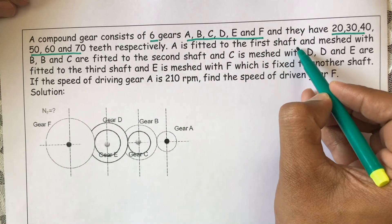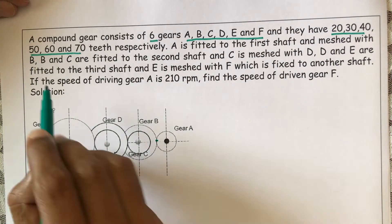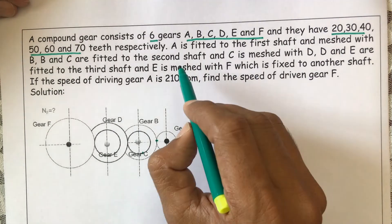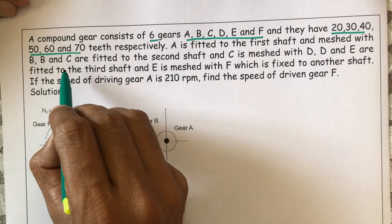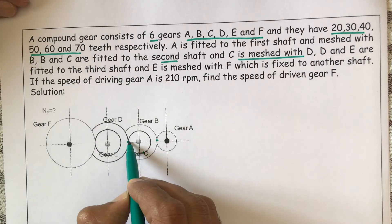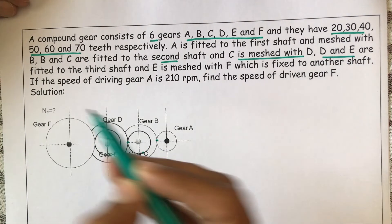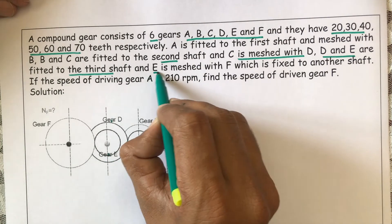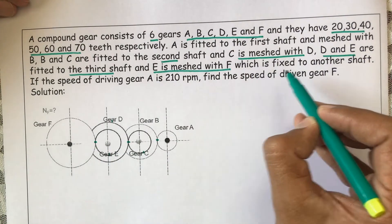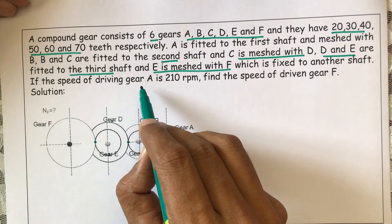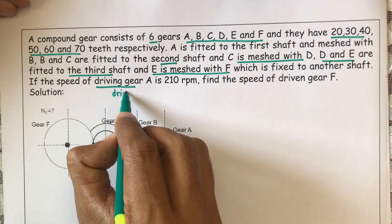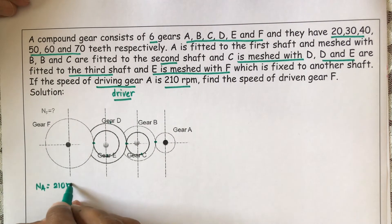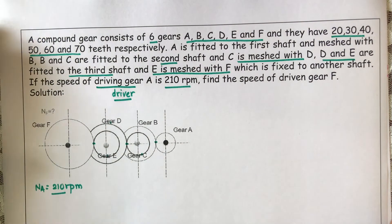Gear A is fitted to the first shaft and meshed with B. Then B and C are mounted on the second shaft — two gears, B and C, are mounted on it. C is meshed with D. D and E are mounted on the third shaft, and E is meshed with F, which is fixed to another shaft. The speed of the driving gear, NA, is given as 210 RPM.